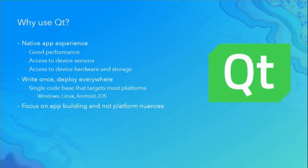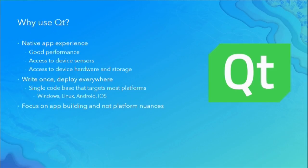Why would you want to use Qt? Primarily because you want to build a native cross-platform application. Web applications run in the browser and are great for reach, but have limitations — mainly that you can't work with offline data easily. With a native application, you can work offline, expect good performance, and access device sensors and hardware like the GPS receiver, accelerometer, compass, and camera.